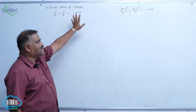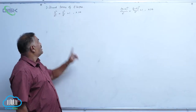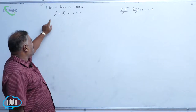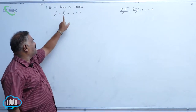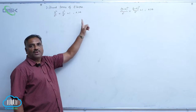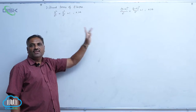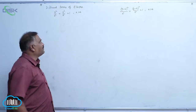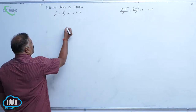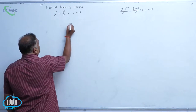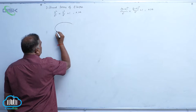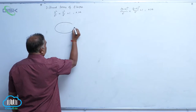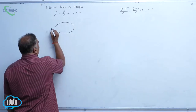We will discuss different forms of ellipse. The standard ellipse equation is x²/a² + y²/b² = 1, where a is greater than b.